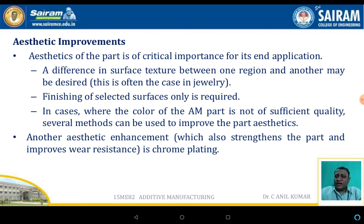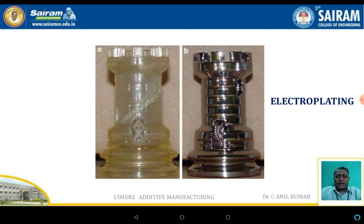Aesthetic improvement: aesthetic improvement of parts is of critical importance for the end application. A difference in surface texture between one region and another may be desired. Finishing of a selected surface only is required. In cases where the color of the additive manufacturing part is not of sufficient quality, several methods can be used to improve part aesthetics, including electroplating. The raw component manufactured by additive manufacturing may not have a good aesthetic look, but when coated by an electroplating technique, the component's appearance is enhanced.